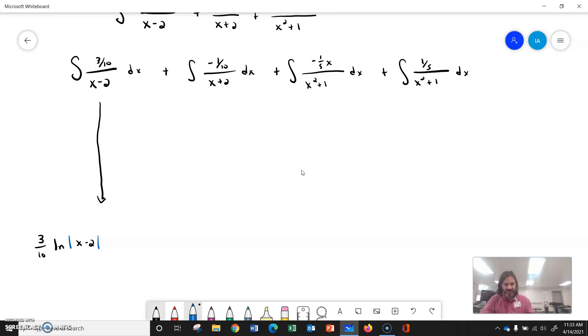Okay, the second one, the integral of negative 1 tenths over x plus 2, that's going to give me minus 1 tenths of the natural log of x plus 2. So a good old natural log integration.